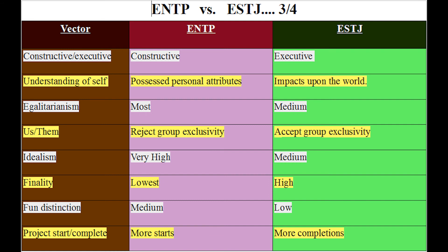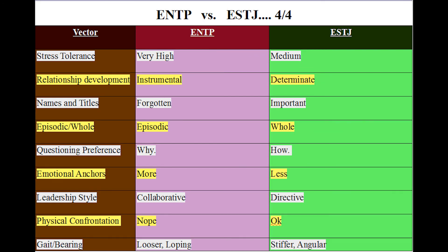ENTPs have more starts, ESTJs have more completions — we're kind of half-assed about finishing things, they're very good at it. They're great people to have around; they're not judgy about personal stuff. It's hard to make them mad, probably because they're emotionally a bit more reserved. Stress tolerance: ENTPs very high, ESTJs medium.